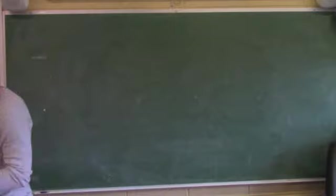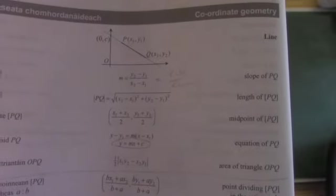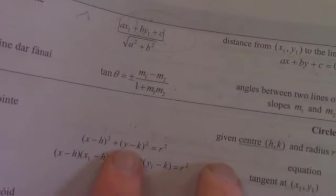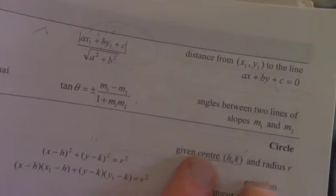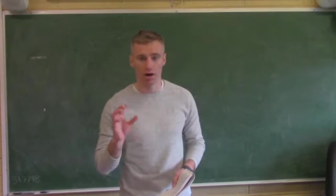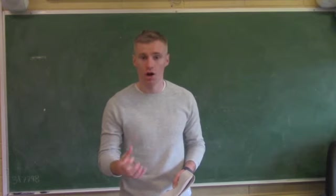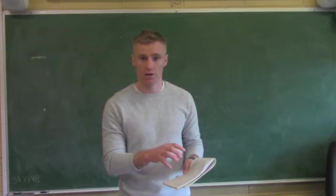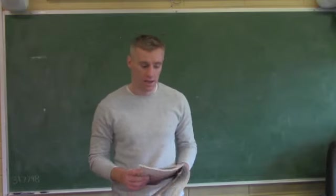Page 18 has several formulas we'll use today. Page 19 has the important circle formula: x minus h squared plus y minus k squared equals r squared, given centre (h, k) and radius r. That is the only formula on page 19 that we'll be using, and it will always be asked — you'll either be asked to use it or given it to take information from.